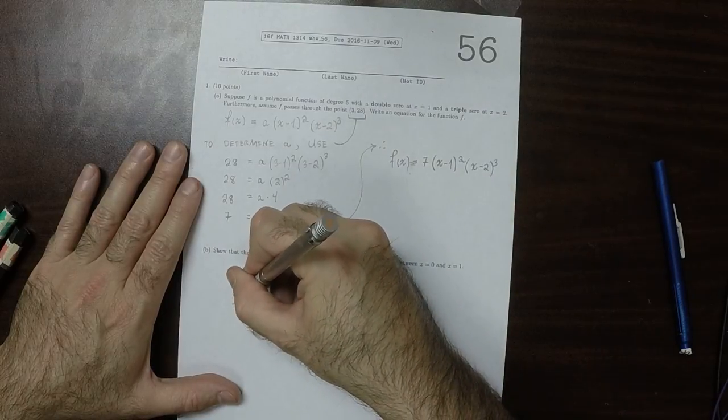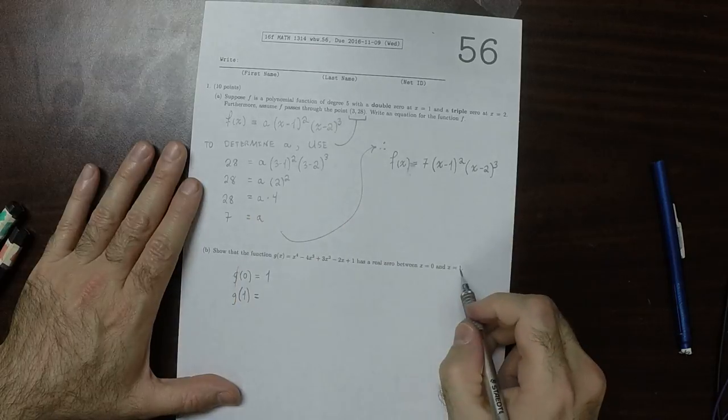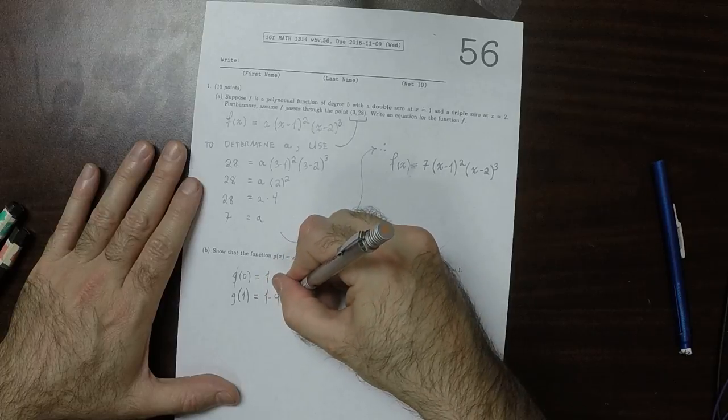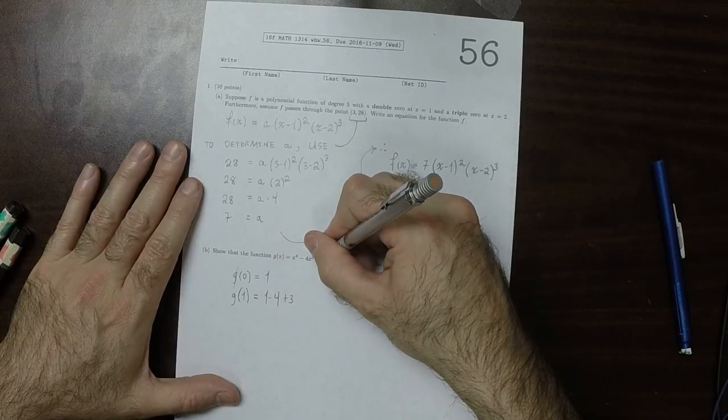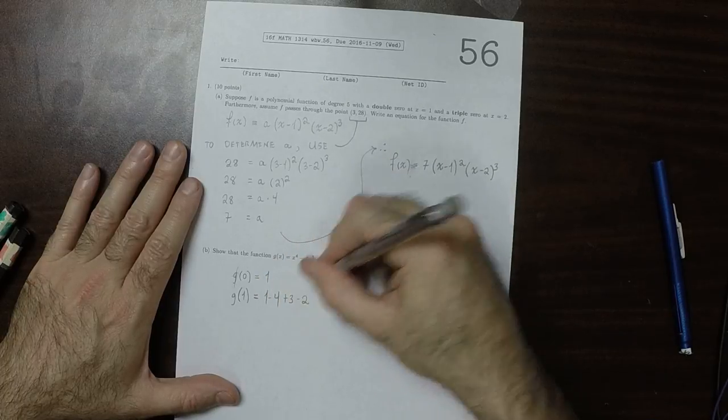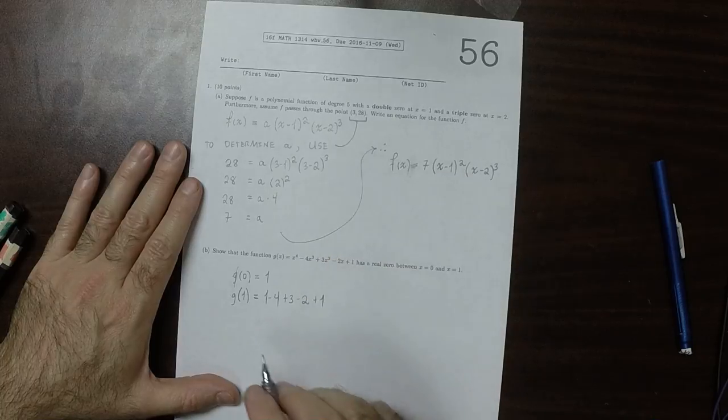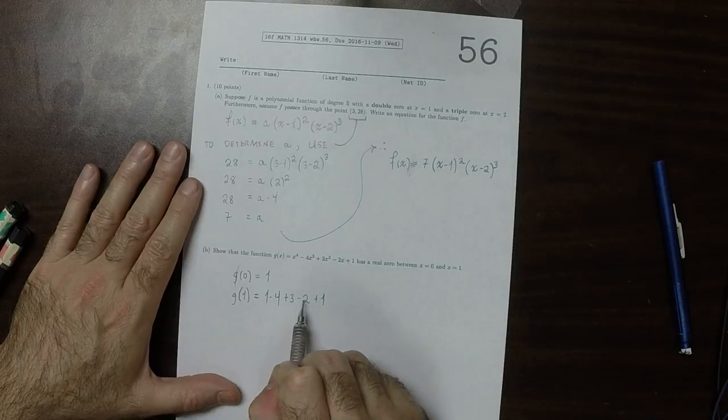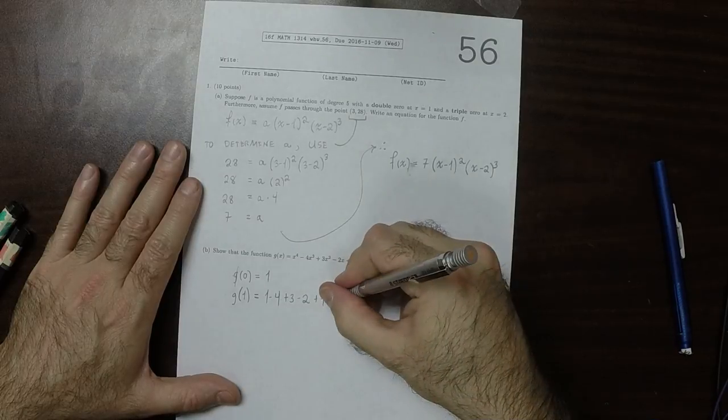And if you plug in 1, you get 1 minus 4 plus 3 minus 2 plus 1. And so what is that? So that's 1 minus 4 is negative 3 plus 3 is 0, minus 2 is negative 2 plus 1 is negative 1.